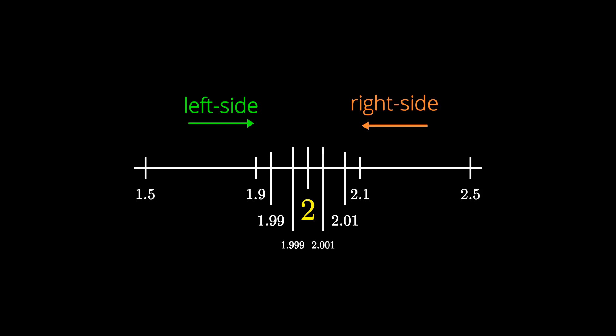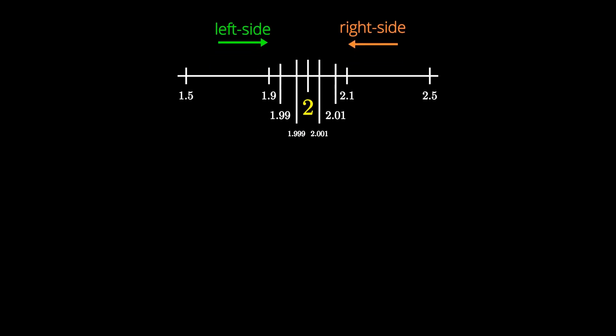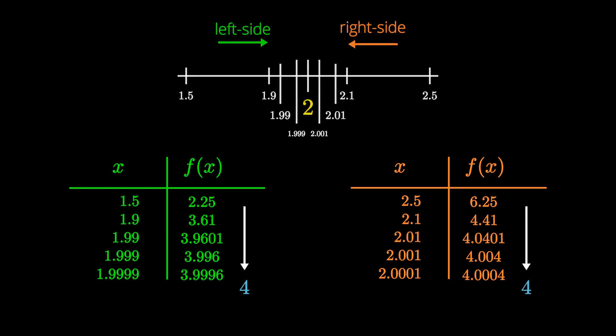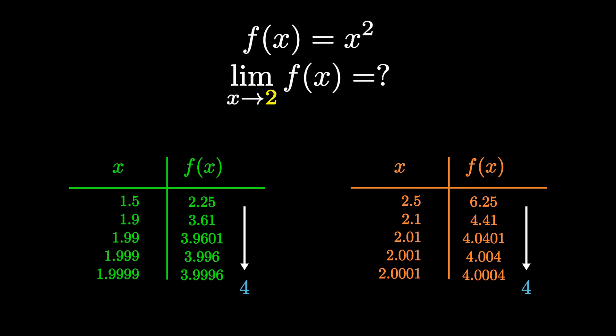We want to see what is happening to f of x as we get really close. If we create tables for both the left side and right side and plug in these values into f of x — looking at the left side's last value, f of x is 3.9996, which is really close to 4. So the left side is approaching 4 as we get really close to 2. And on the right side, the last value is 4.0004, which is also pretty close to 4. So the right side as it approaches 2 is approaching 4 as well. Therefore, the limit as x approaches 2 of f of x is 4.